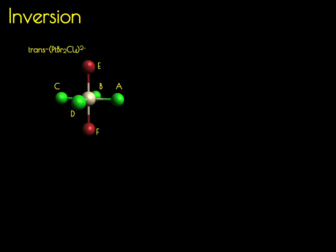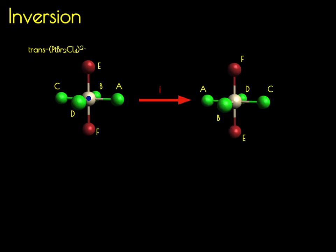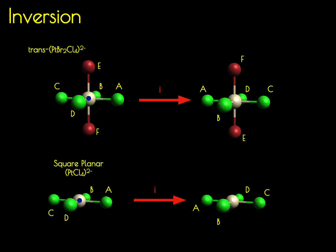Moving on, we're now going to talk about the inversion operation. The inversion operation operates through a central point in the molecule — the point that defines the point group — which is on the platinum atom. It takes all points X, Y, and Z and converts them to minus X, minus Y, and minus Z. Performing an inversion on the six-coordinate platinum species results in A and C interconverting, D and B interconverting, and F and E interconverting. Just as with the horizontal mirror plane, the square planar platinum tetrachloride also has an inversion center — the vacant positions are interconverting, but you still get the same molecule out.